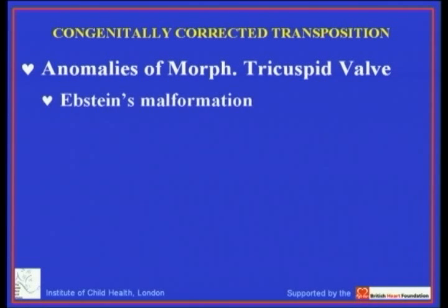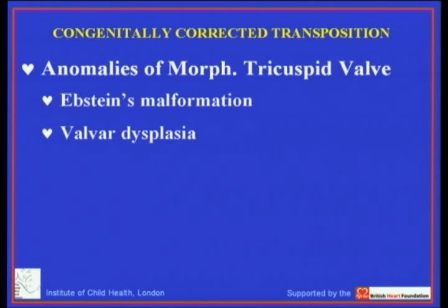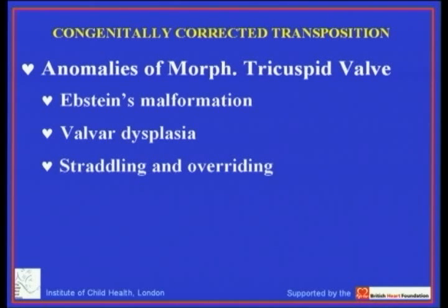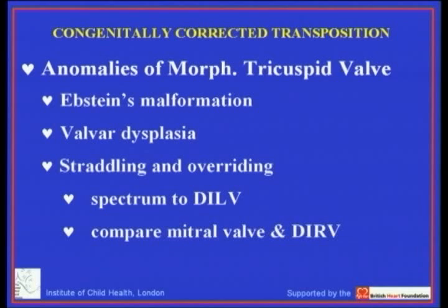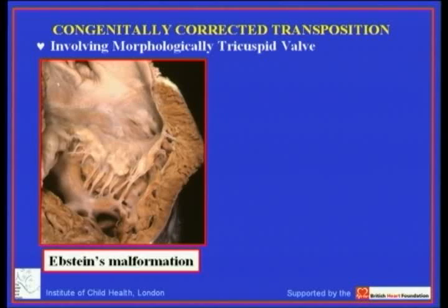Abnormalities of the morphologically tricuspid valve most frequently take the form of Ebstein's malformation. Valvar dysplasia is part of Ebstein's but can also exist in isolation. The morphologically tricuspid valve can straddle and override, with a spectrum of malformation leading toward double inlet left ventricle. A similar spectrum involving the mitral valve, when it straddles and overrides, leads toward inlet right ventricle.